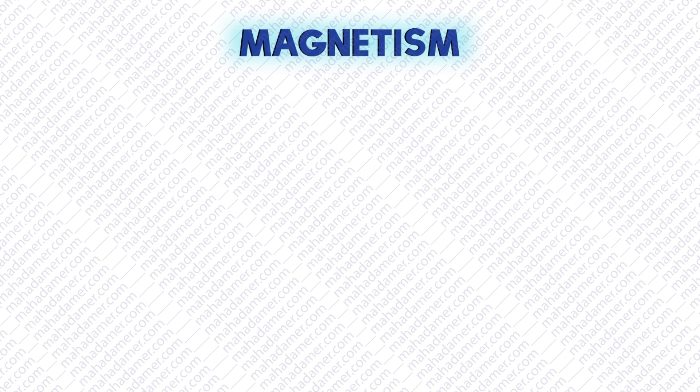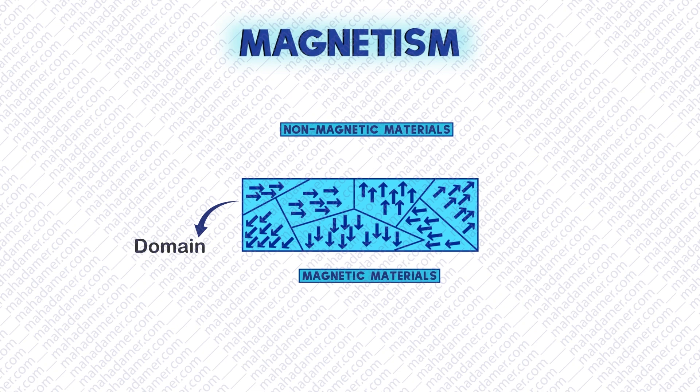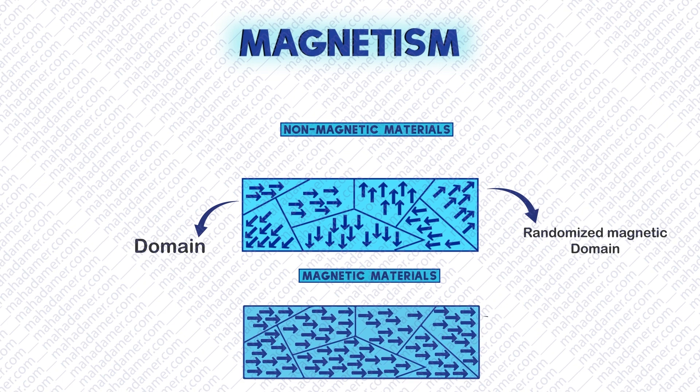There are two types of material magnetically: non-magnetic materials and magnetic materials. In non-magnetic materials, all domains are randomized, pointing here and there.